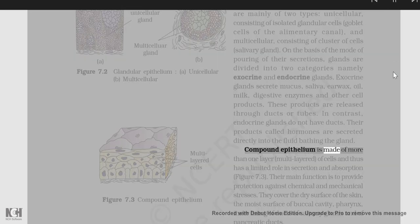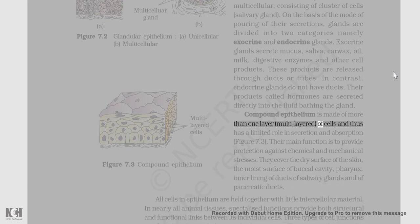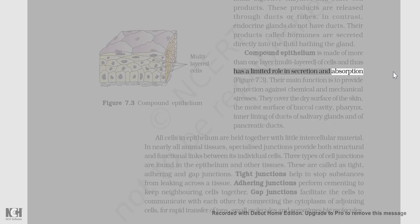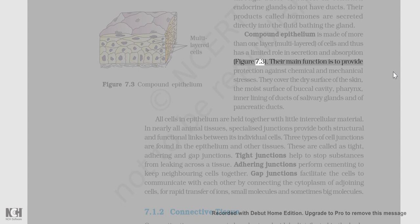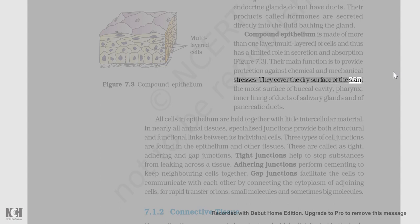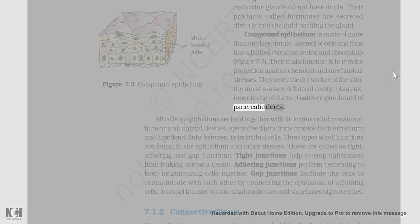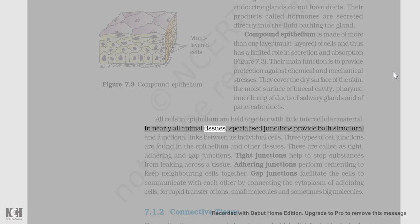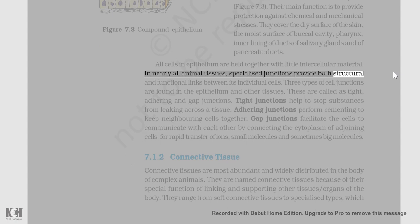Compound epithelium is made of more than one layer (multilayered) of cells and thus has a limited role in secretion and absorption (figure 7.3). Their main function is to provide protection against chemical and mechanical stresses. They cover the dry surface of the skin, the moist surface of the buccal cavity, pharynx, and the inner lining of ducts of salivary glands and of pancreatic ducts. All cells in epithelium are held together with little intercellular material. In nearly all animal tissues, specialized junctions provide both structural and functional links between individual cells.